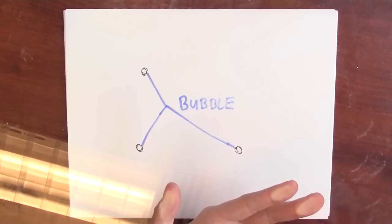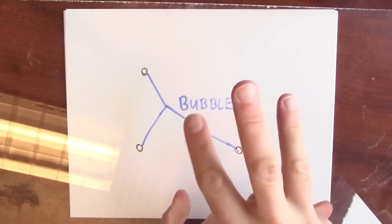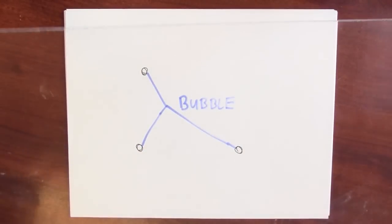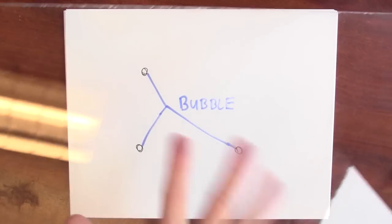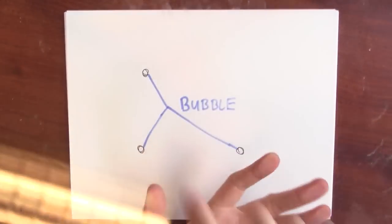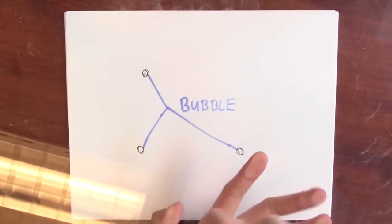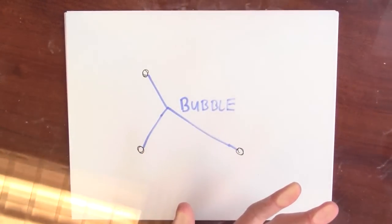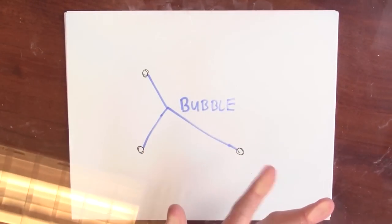This is a story about three bubbles — well, it's really about three bubble walls. I imagine that I've got this pane of glass here, and I've got three points connected by three edges of bubble. So where do these bits of bubble end up intersecting?